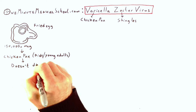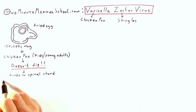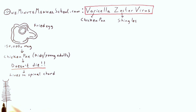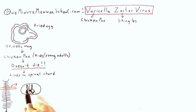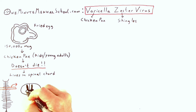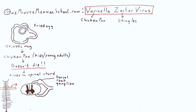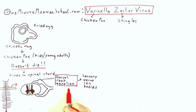Instead, it lives in your spinal cord and goes dormant there. It lives in the dorsal root, which is the root behind that supplies sensation. The nerves from your skin all have cell bodies here in the dorsal root ganglion, and that's where the virus lives.